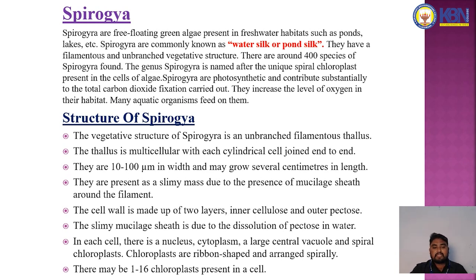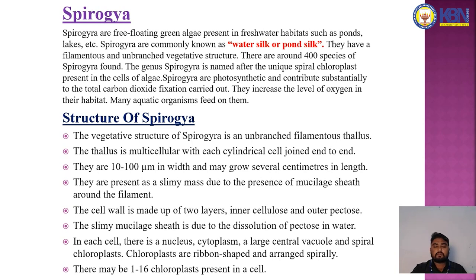In each cell there is a nucleus, cytoplasm, a large central vacuole, and a spiral chloroplast. The chloroplasts are ribbon-shaped and arranged spirally. There may be one to sixteen chloroplasts present in each cell.